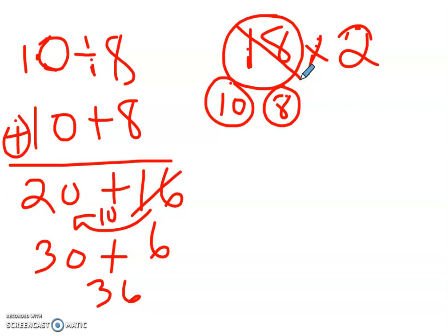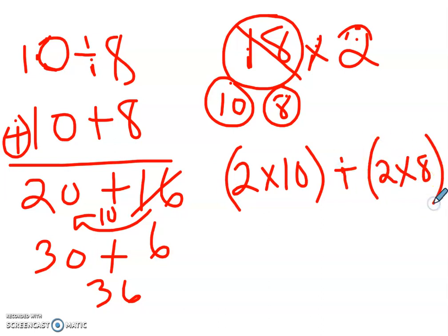And then I set this up as distributive property, right? This would be 2 times 10 plus 2 times 8. So 2 times 10 is 20. 2 times 8 is 16. 20 plus 16 is 36.